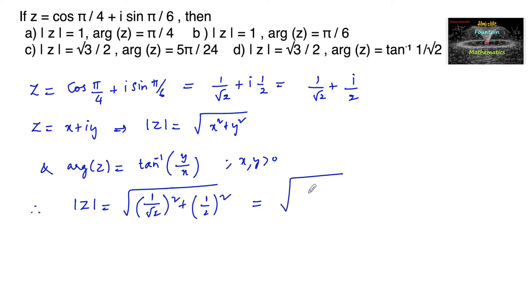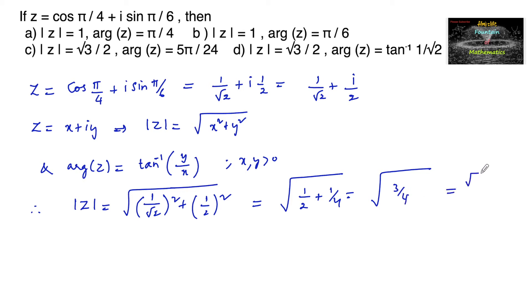So mod z = √((1/√2)² + (1/2)²) = √(1/2 + 1/4). This equals √(2/4 + 1/4) = √(3/4) = √3/2. Therefore mod z = √3/2.